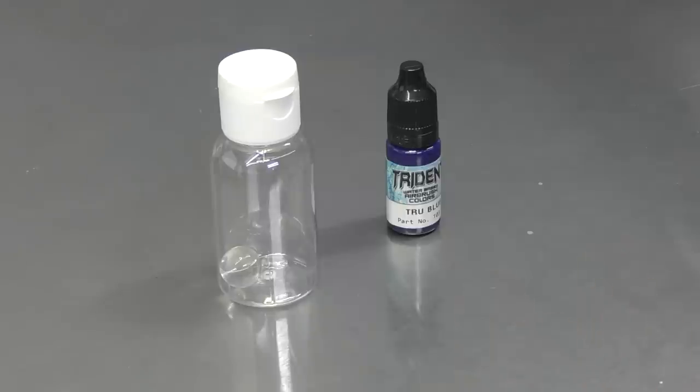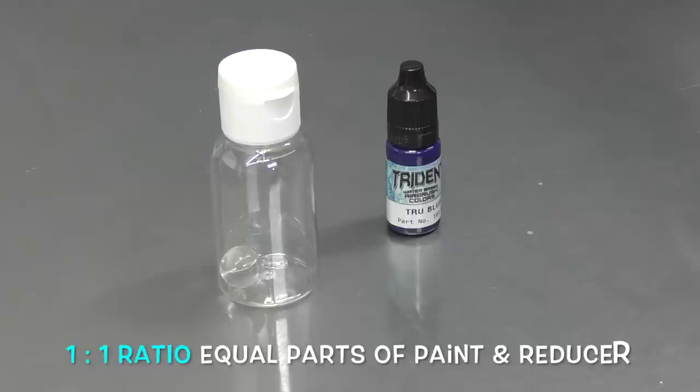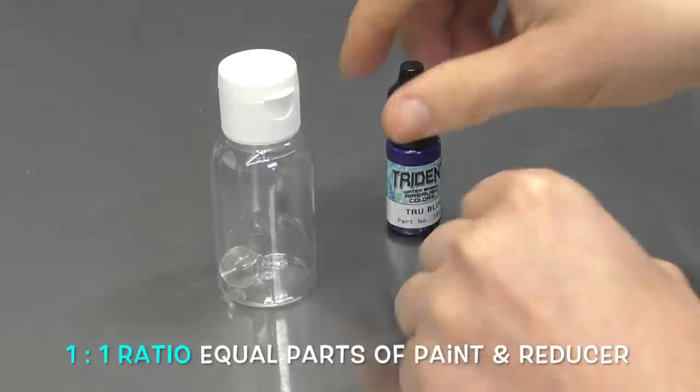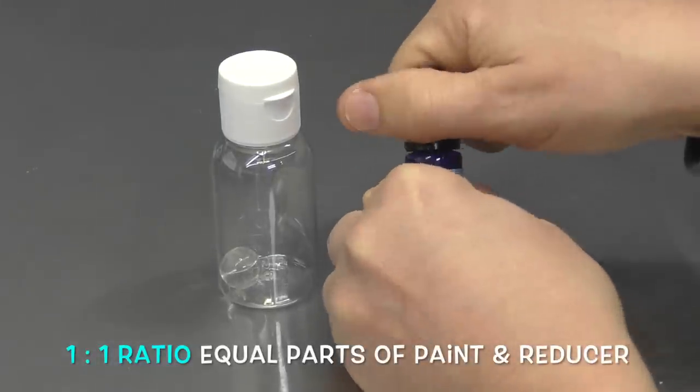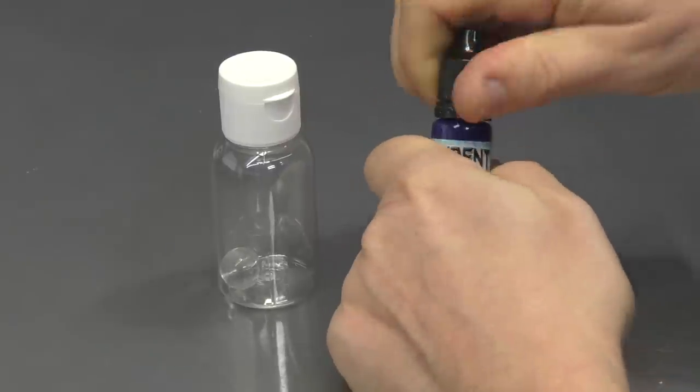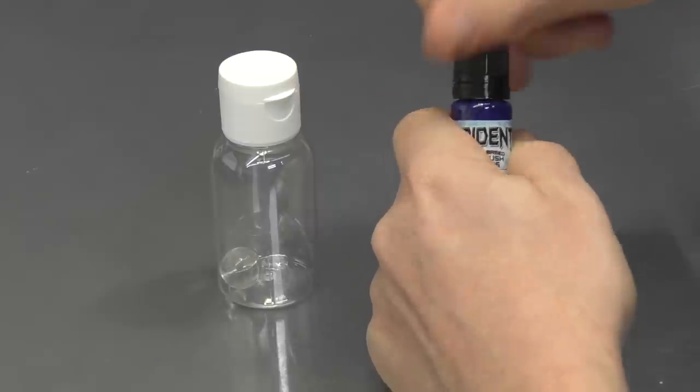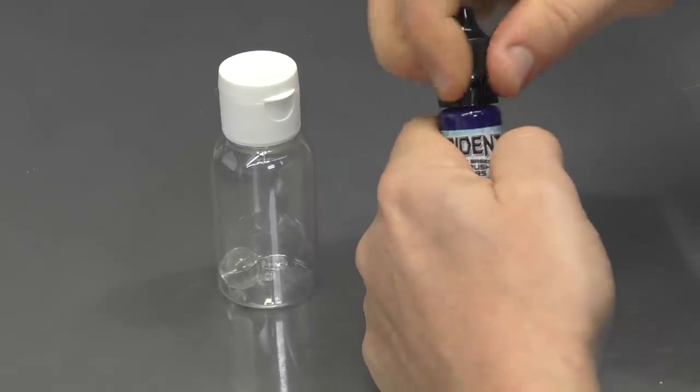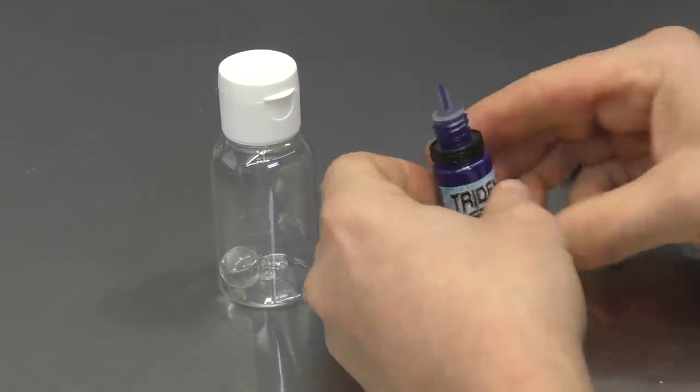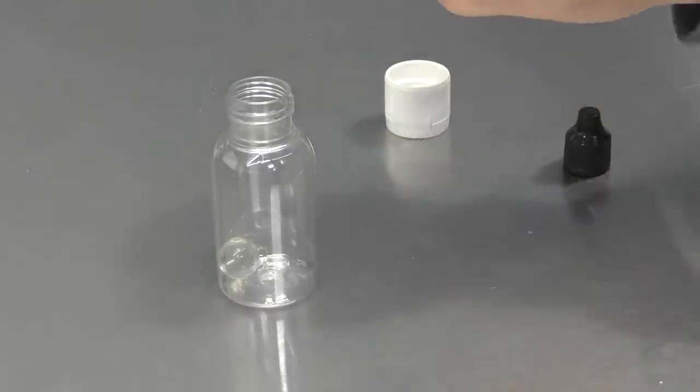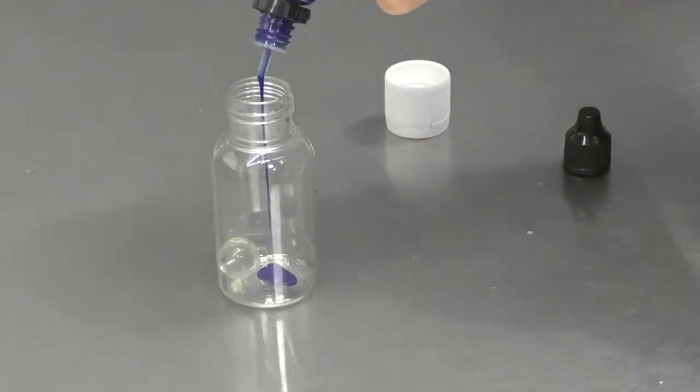Okay. So the first ratio that I want to talk about is a one to one ratio. So this is the mix that I pretty much recommend to my students and anyone who's starting with the airbrush. Depending on brand, you may also be able to use the paint straight. I like to mix the Trident. So let's just go with a one to one ratio. So this is used for general airbrushing.